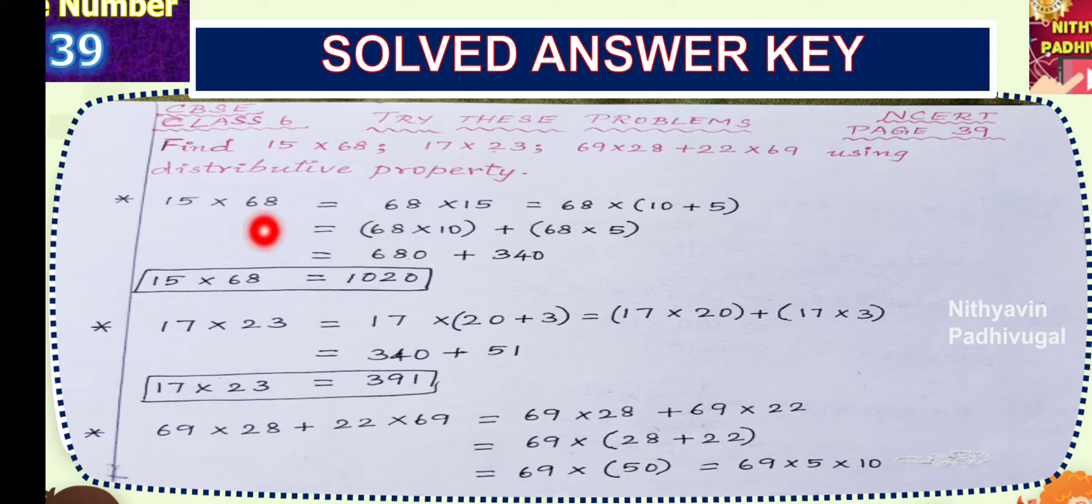Similarly, 17 multiplied by 23. Before going to this problem, I tell you one thing. You can split 68 also as 60 plus 8. So, you can do in both methods. You will get the same answer only. There is no necessity to split only 15. I have chosen this because this is the smallest number.